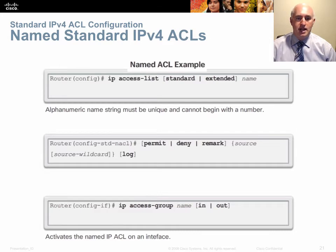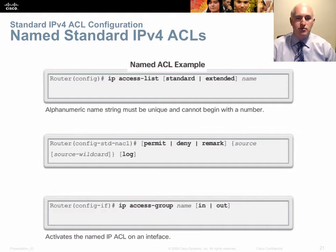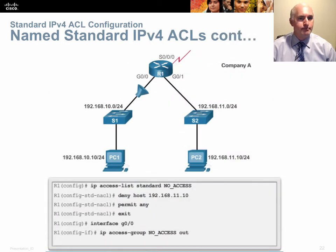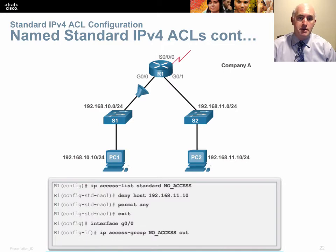When done, apply the list the same way but instead of typing 'ip access-group' and a number, type 'ip access-group' and the name. Remember it is case-sensitive, so if you used mixed case you must maintain that same pattern. ACL names can use dashes and underscores, up to about 32 characters, making them quite descriptive — for example, 'NO_ACCESS'.